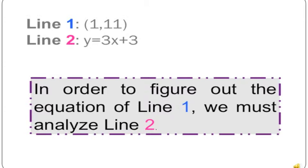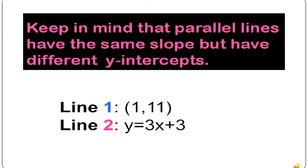In order to figure out the equation of Line 1, we must analyze Line 2. Here is the given information: for Line 1, we were only given a point, which is (1, 11). For Line 2, we were given the equation y equals 3x plus 3.